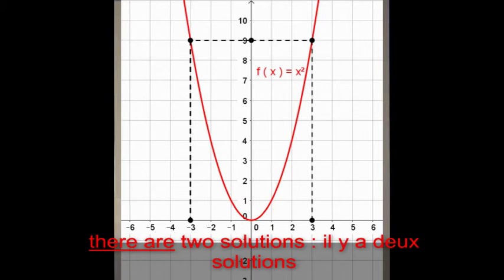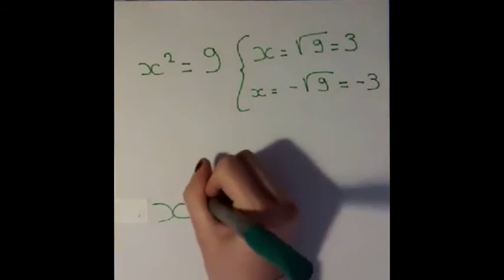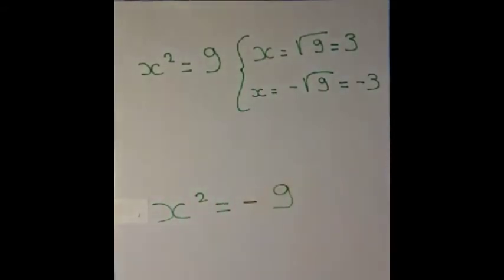And if we have the equation x squared equals negative 9, there isn't any solution because a square is always positive.